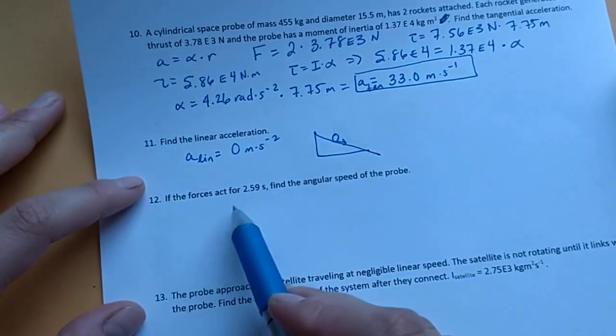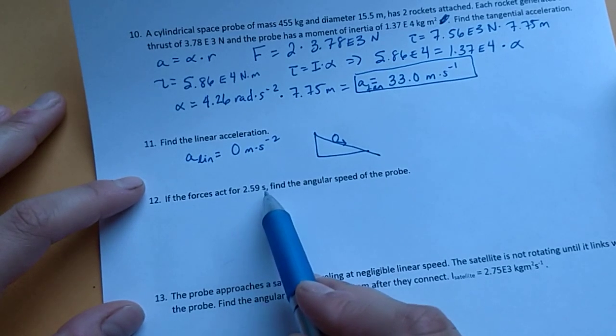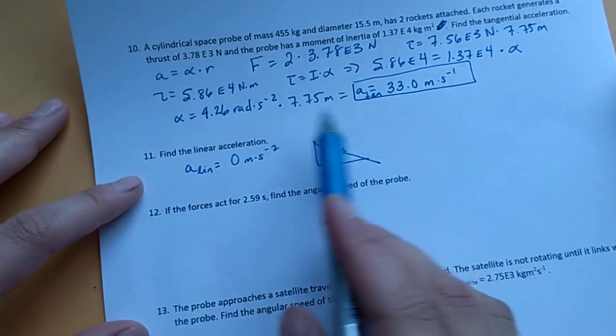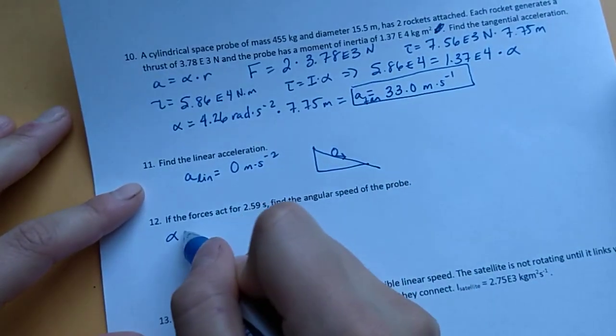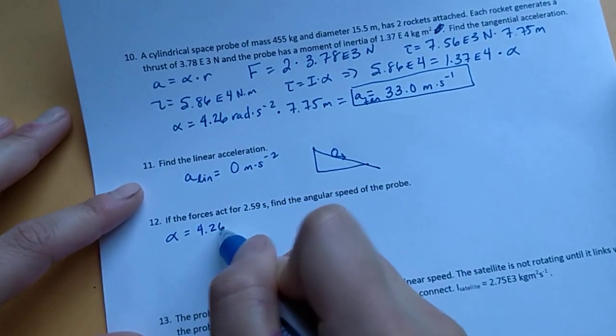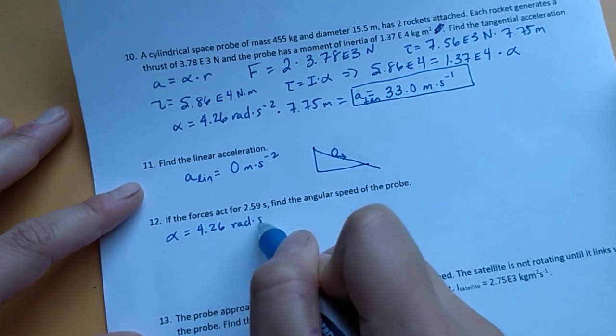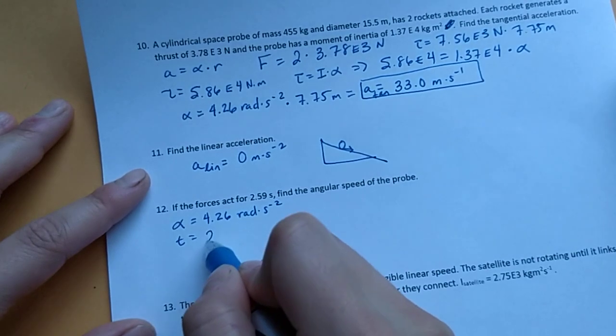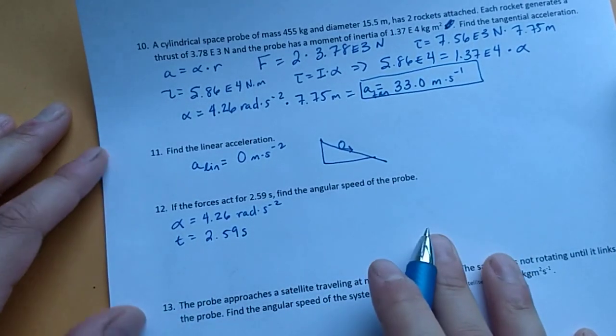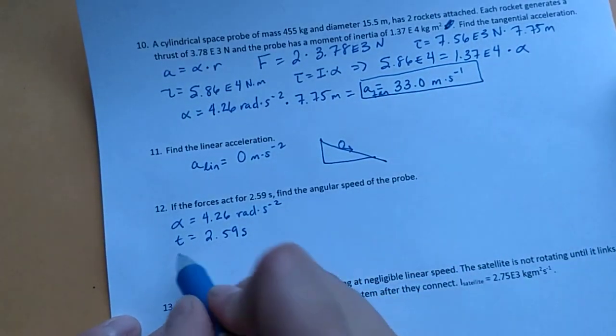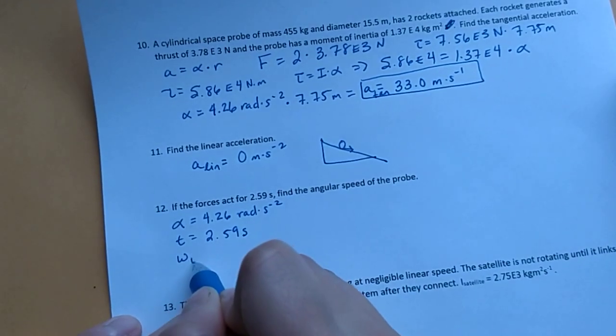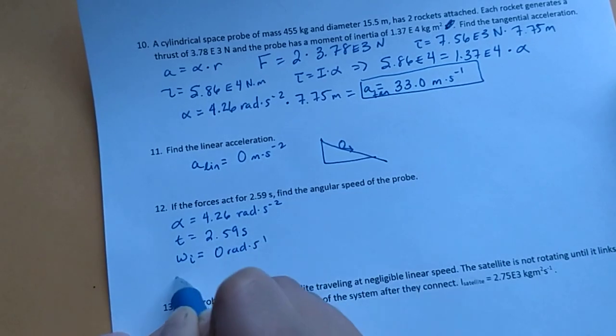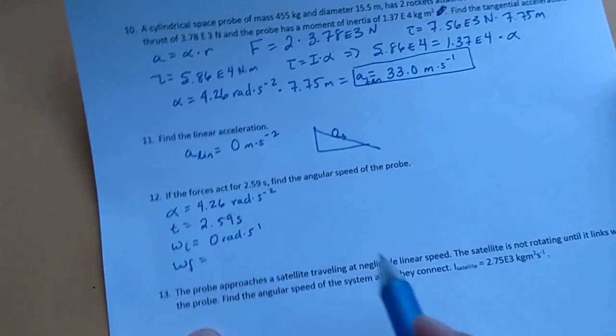Okay, number 12. If the forces act for 2.59 seconds, find the angular speed of the probe. So I know the angular acceleration already. It's 4.26 rads per second squared. The time this takes is 2.59 seconds. I'm going to assume that this thing starts from rest. So omega initial is 0 rads per second. And we're looking for the final, omega final.